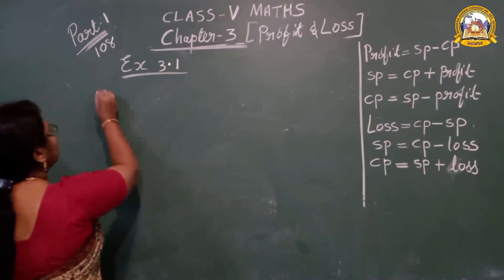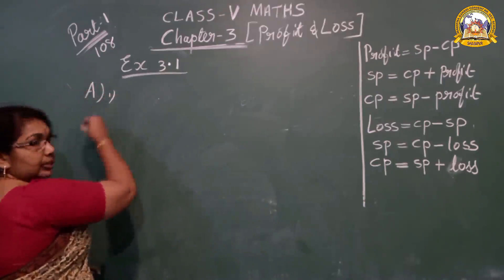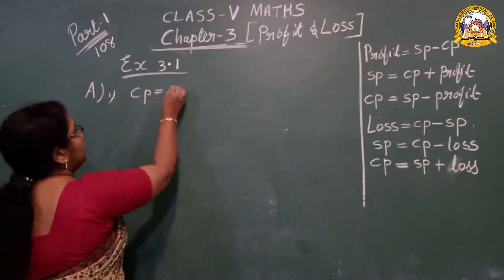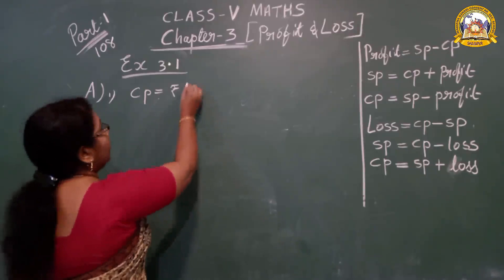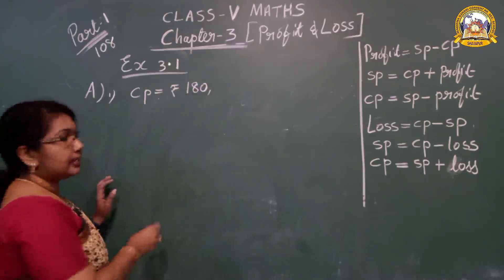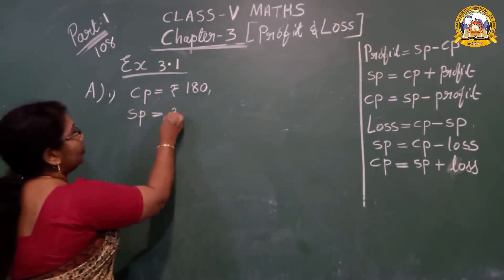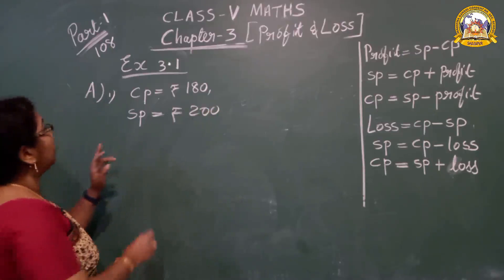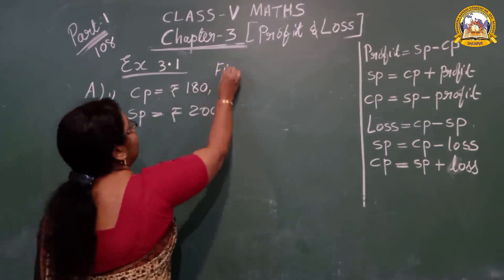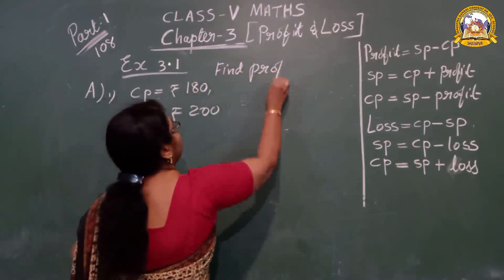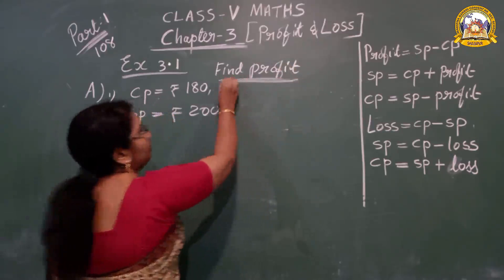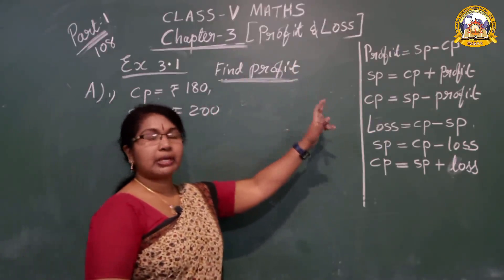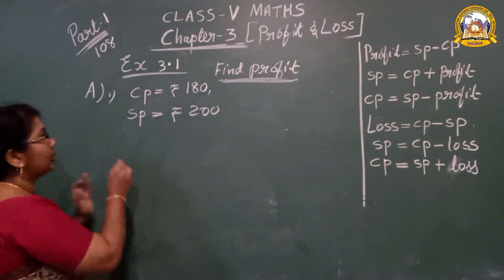In question number 1, part A: CP and SP are given. CP is equal to rupees 180, SP is equal to rupees 200. What do you have to find out? The main question is: find profit. Now look at the formula — what is the profit formula? Selling Price minus Cost Price. Don't forget to write the formula.